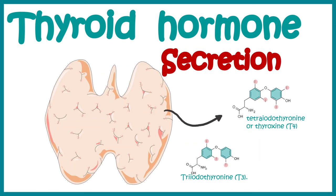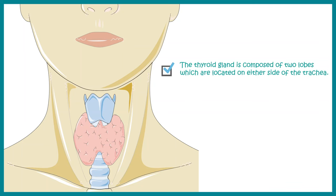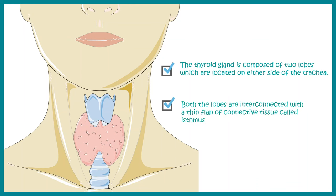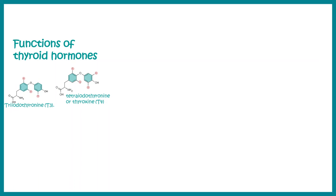In this video we'll talk about thyroid hormone secretion. Let's get a quick overview. The thyroid hormone is produced by the thyroid gland, which is composed of two lobes located on either side of the trachea, connected by a thin connective tissue flap known as the isthmus. Thyroid hormones include triiodothyronine (T3) and tetraiodothyronine, or thyroxine (T4).